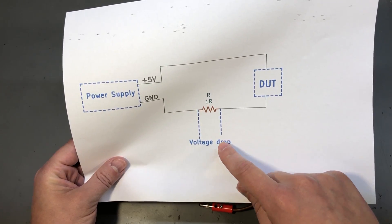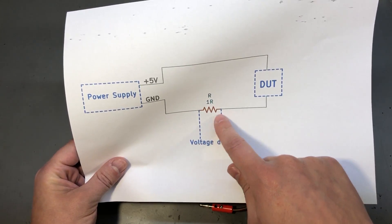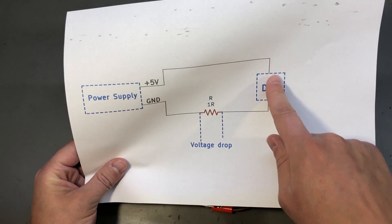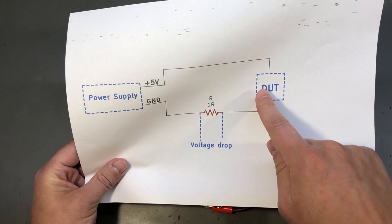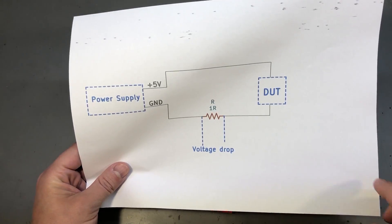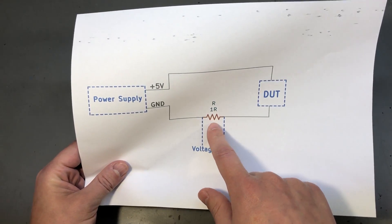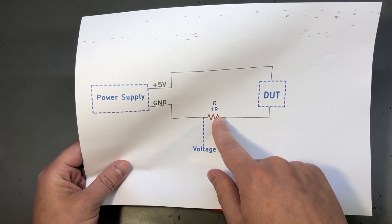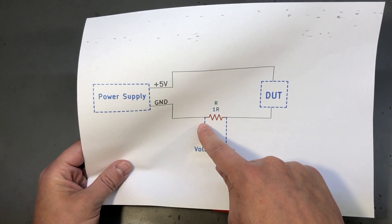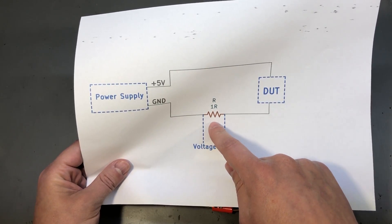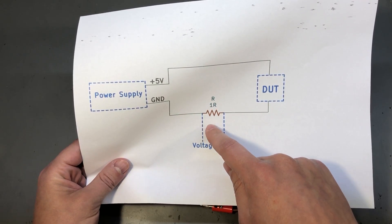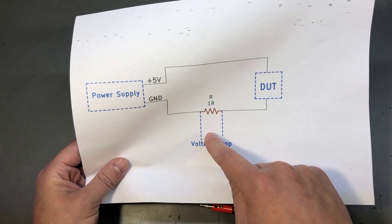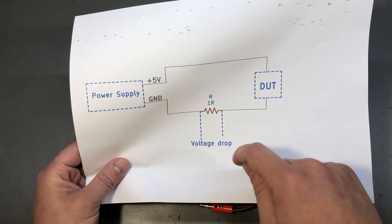All we have to do is introduce this resistor in line with our power supply and the device under test. For example, if this is a 1 ohm resistor, we have a 1 to 1 ratio — for each milliamp passed through this resistor we will have 1 millivolt of voltage drop that our oscilloscope can measure and display.